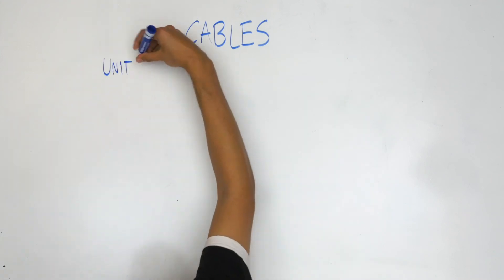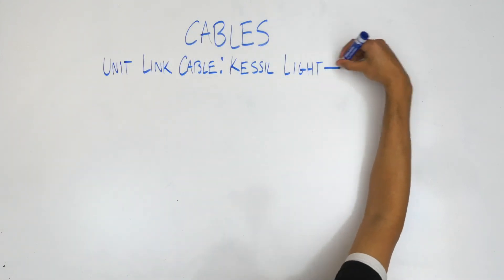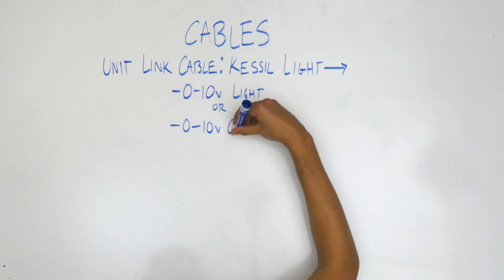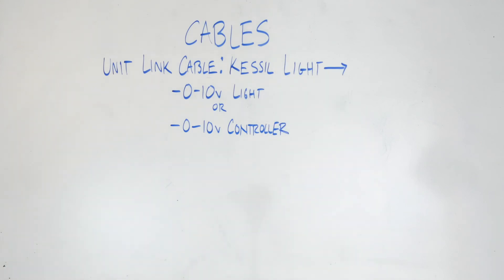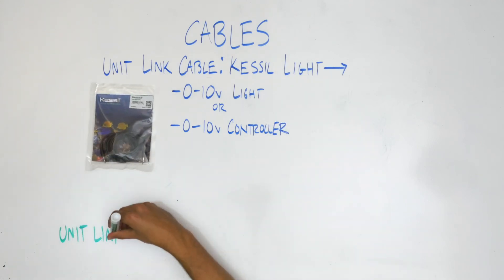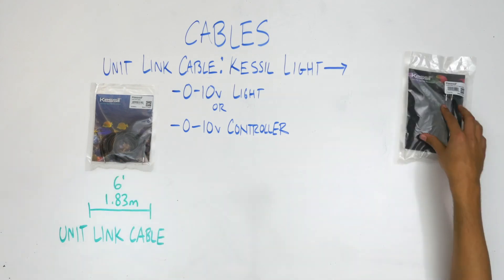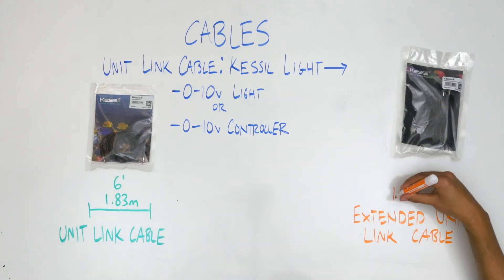Finally, there are three link cables, which connect the A80 tuna blue to another 0-10 volt light or controller. This cable comes in three varieties, the unit link cable, which is 6 feet long, the extended unit link cable, which is 20 feet long, and the 90 degree unit link cable, which is 10 feet long and features a detachable right angle input plug.